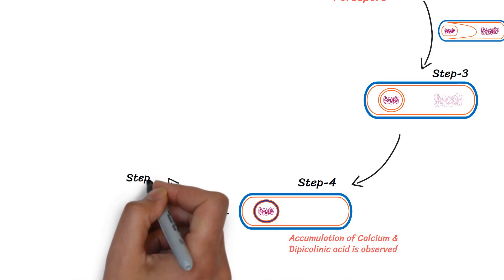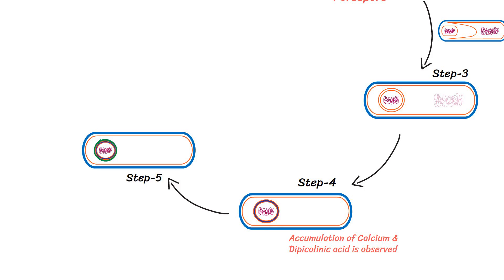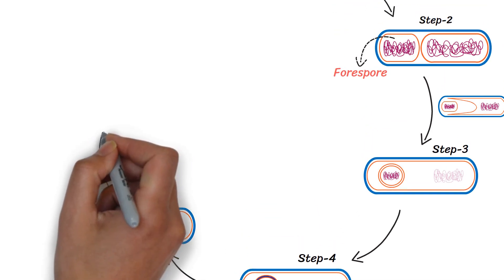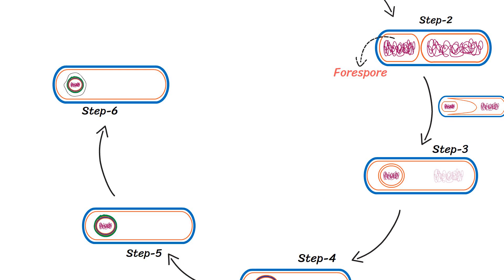In step 5, protein coats are formed around the cortex. In step 6, maturation of the spore occurs. A lot of dehydration takes place in this stage.